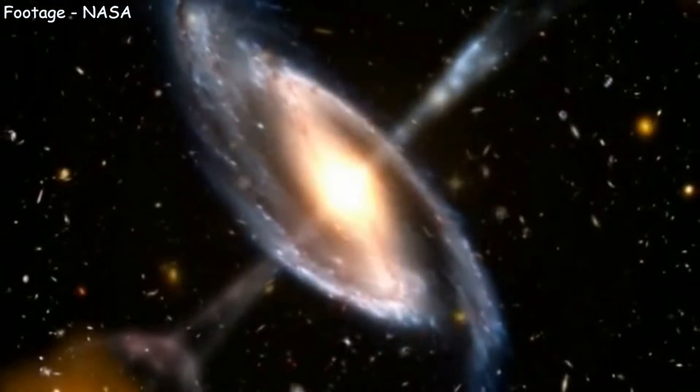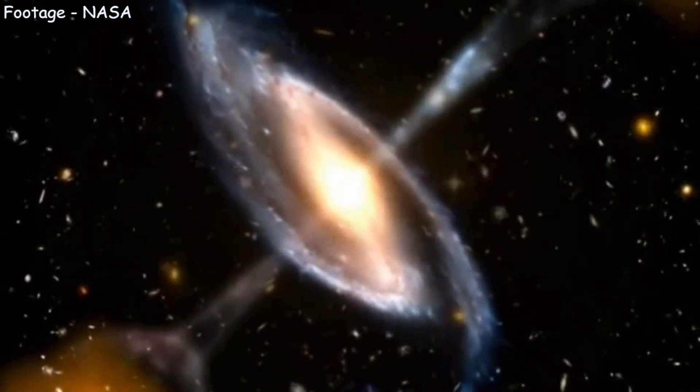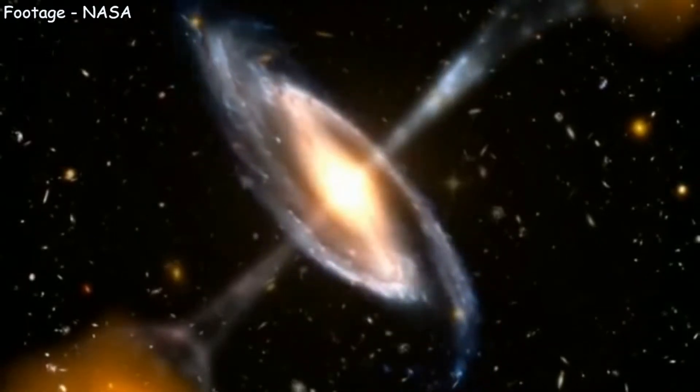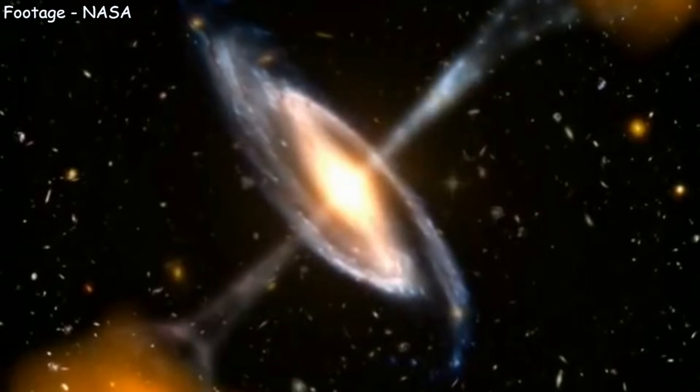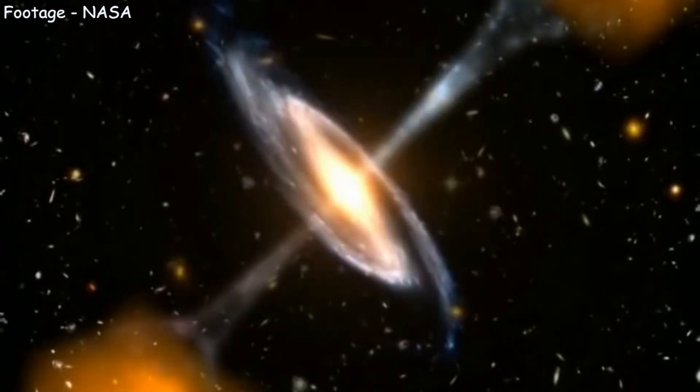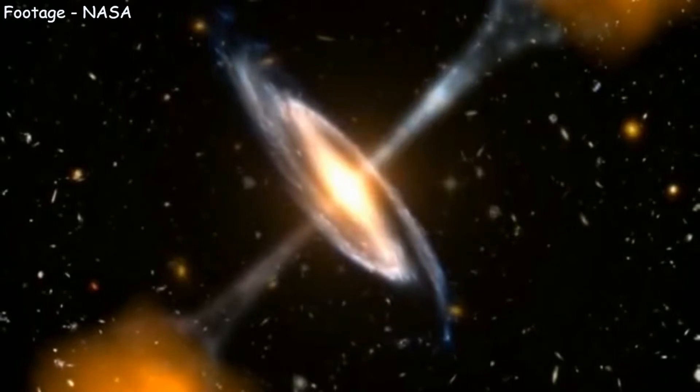Motions of the stars tell you how much matter there is. They don't care what form the matter is, they just tell you that it's there. In the Dragonfly Galaxy, stars move very fast. Hence, it has a large mass as well. Can you guess why?